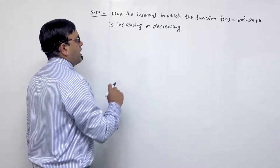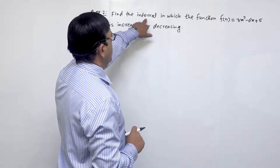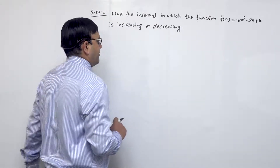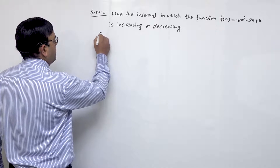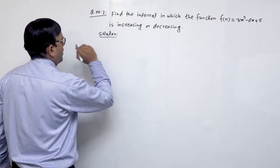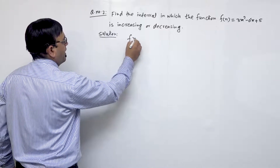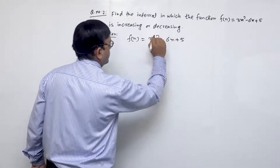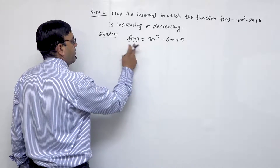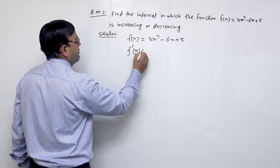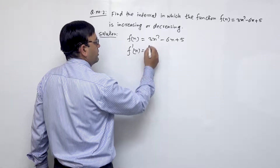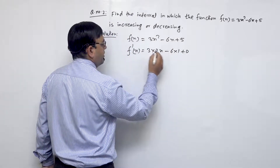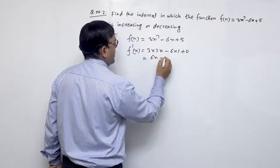So first we have to understand the question. The solution: we have f(x) = 3x² - 6x + 5. The derivative of this, f'(x), the first derivative, is 3 times 2x minus 6 times 1 plus 0, which equals 6x - 6. This is the first derivative.